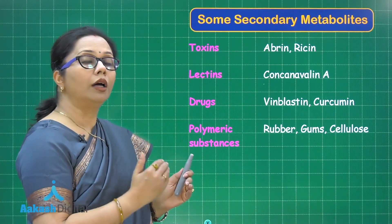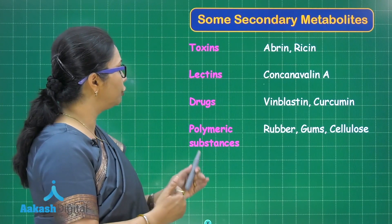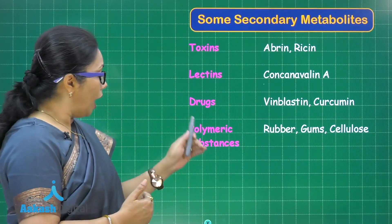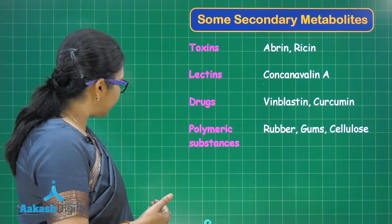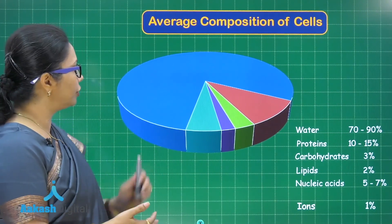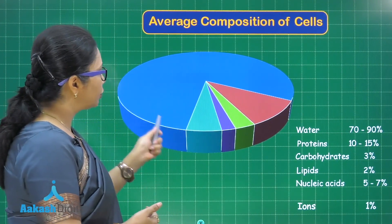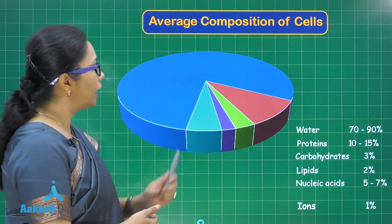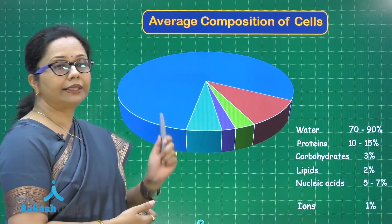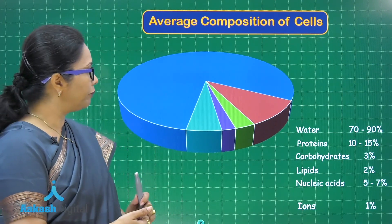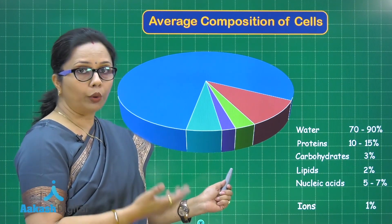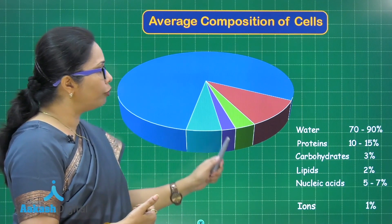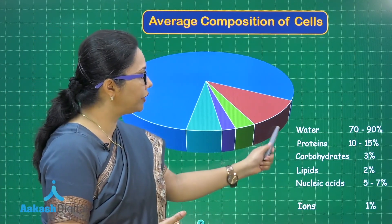Curcumin is from turmeric. Polymeric substances — a polymer is a compound formed by many units called monomers joining together. Examples of polymeric secondary metabolites include rubber, gums, and cellulose. Looking at the average composition of the cellular pool, the majority of the substance in the cell is water at 70 to 90%, then proteins at 10 to 15%, nucleic acids at 5 to 7%, carbohydrates at 3%, and lipids at 2%. Inorganic ions like sodium, chloride, potassium, and calcium are about 1%, not shown in the pie chart.